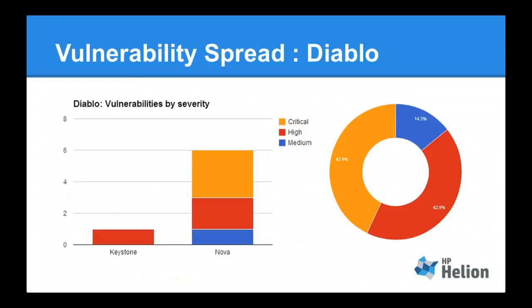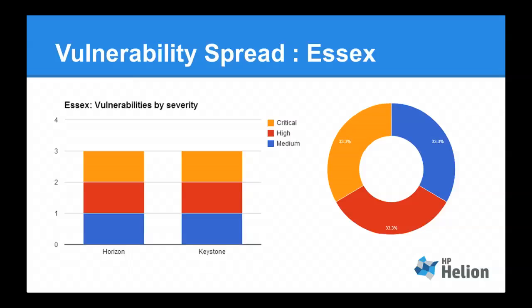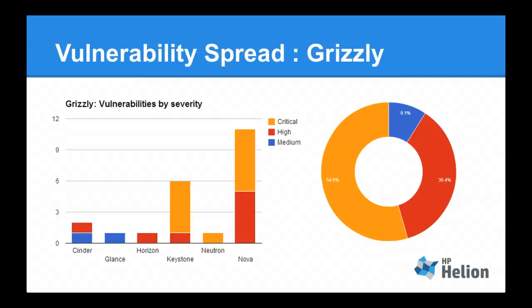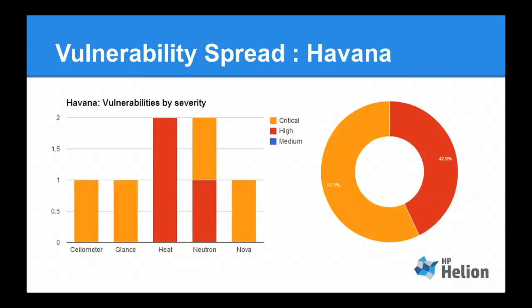Looking at the vulnerability spread between different releases: in Diablo it was Keystone and Nova, and a little under half of the vulnerabilities were critical — orange denotes critical. Essex: Keystone and Horizon, about a third. Then we start seeing trends. In Folsom, the number of projects having security vulnerabilities starts to spread — we have Glance, Keystone, Nova, and a mixed one affecting Nova, Keystone, and others. Well over half of these vulnerabilities were rated as critical. Going into Grizzly, more projects, more big vulnerabilities. In Havana, the number of projects seems to stabilize, but the criticality of a lot of these bugs continues to grow.